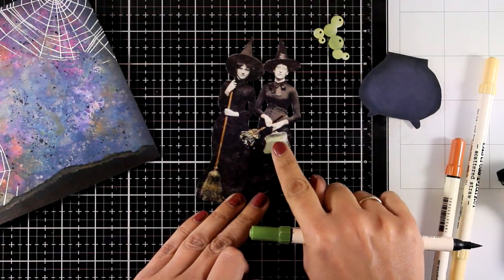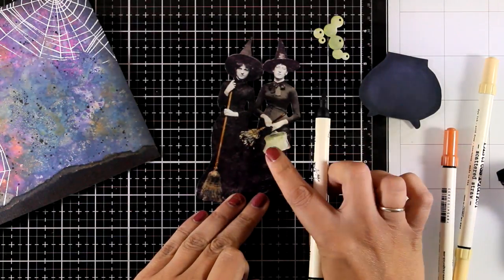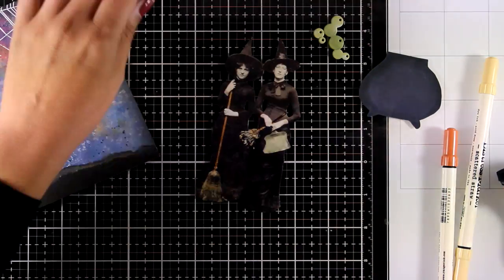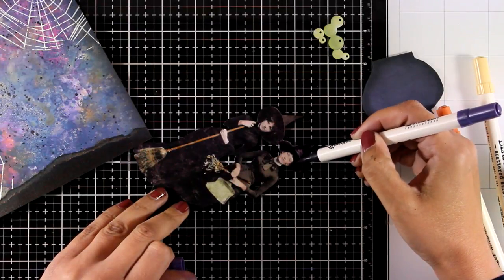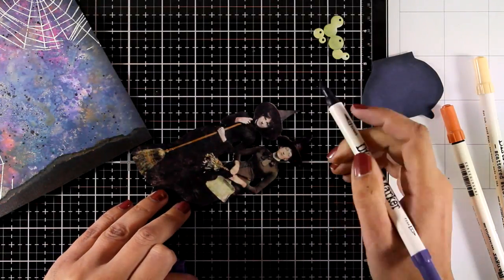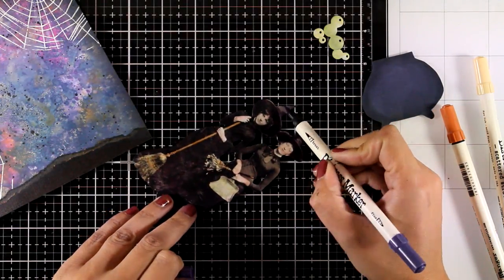Now I'm going to use Peeled Paint. And you can see how easy I can smudge it with my finger. I don't need a lot of color there. I just want a tint. And finally I'm using Dusty Concord to add touches of color on their hats as well as on their clothes.